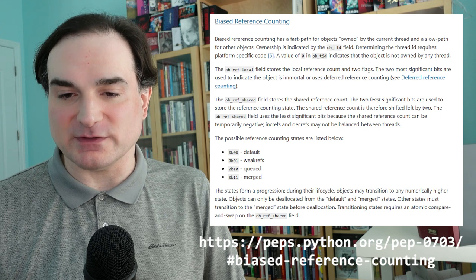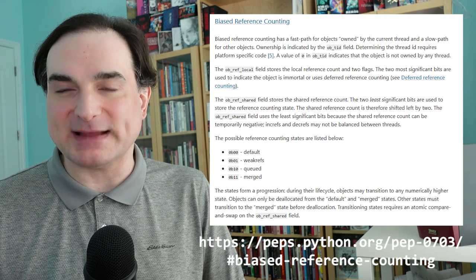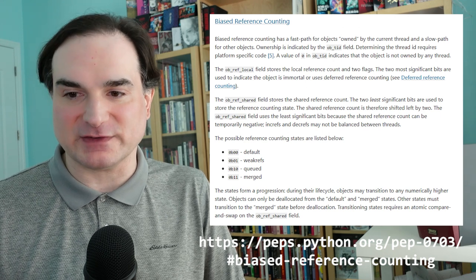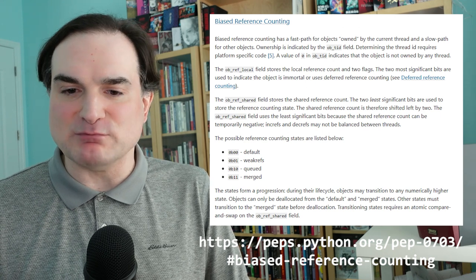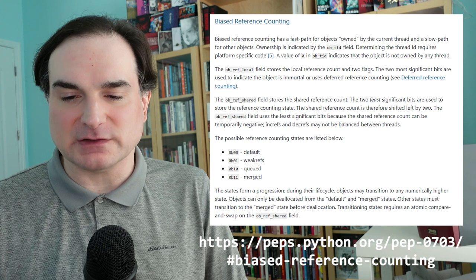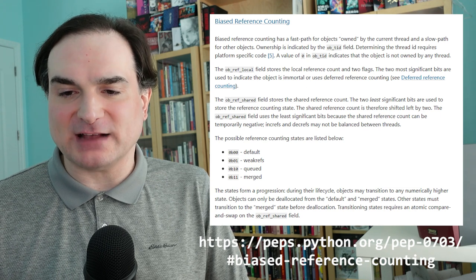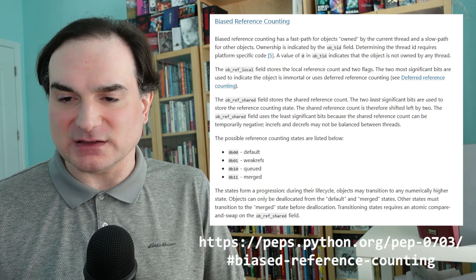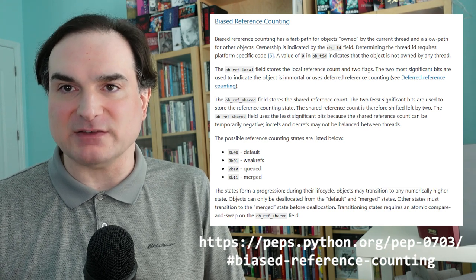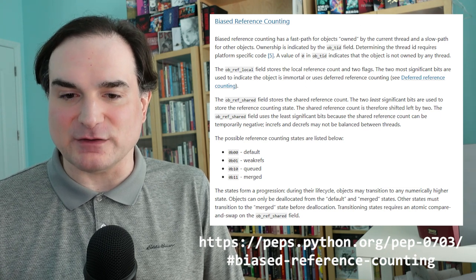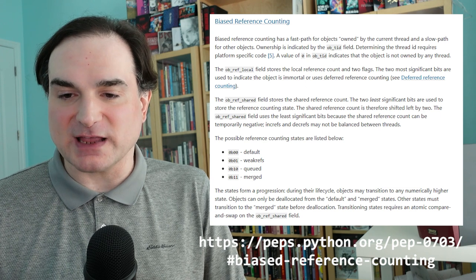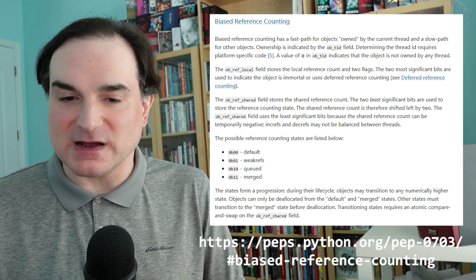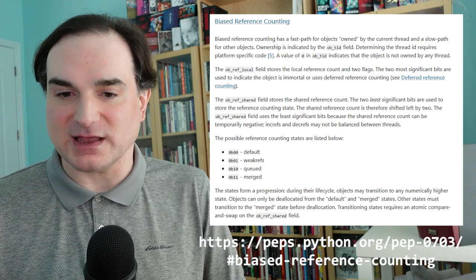The way biased reference counting works is that most objects tend to be accessed by things that live in the same thread as the object itself. So when that happens, we can handle that with code that's optimized for that case.